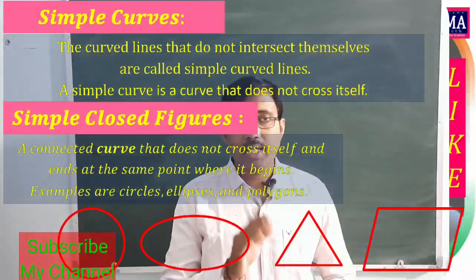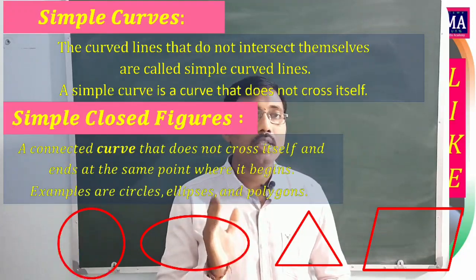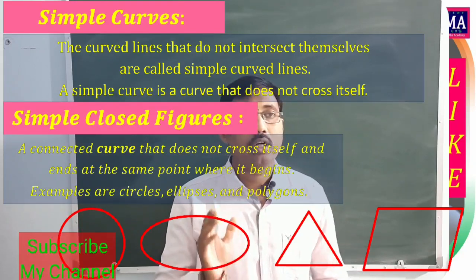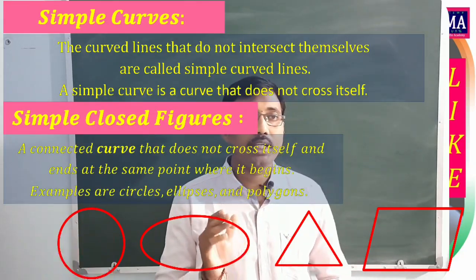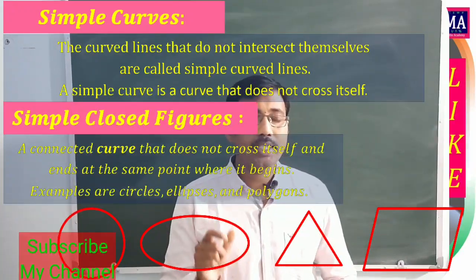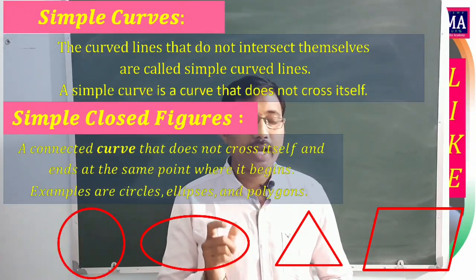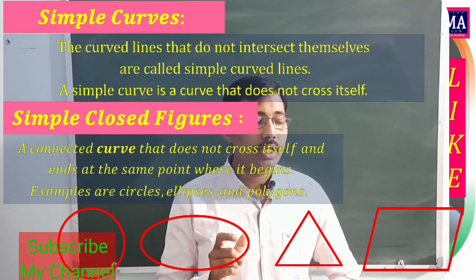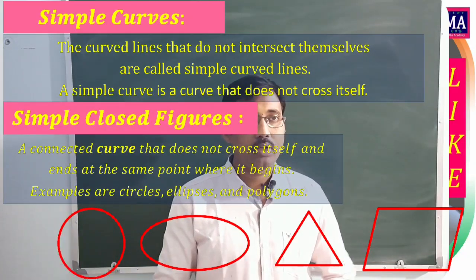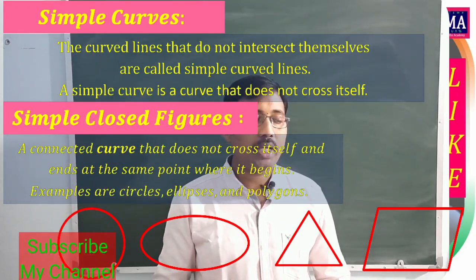A simple curve is a curved line that does not intersect itself. The curved lines that do not intersect themselves are called simple curved lines. A simple closed figure is a connected curve that does not cross itself and ends at the same point where it begins. Examples include circles, polygons, and quadrilaterals.